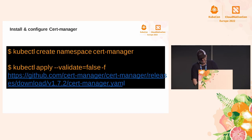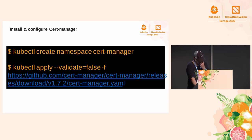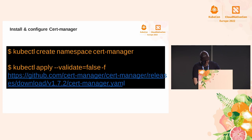Another way to install cert-manager is using the YAML configuration file found in the cert-manager GitHub repository. This is probably the most up-to-date way because you are accessing the source code directly. The first step is to create a namespace for cert-manager. Certificates can be requested and configured by applying the cert-manager.io/issuer annotation to ingress resources.